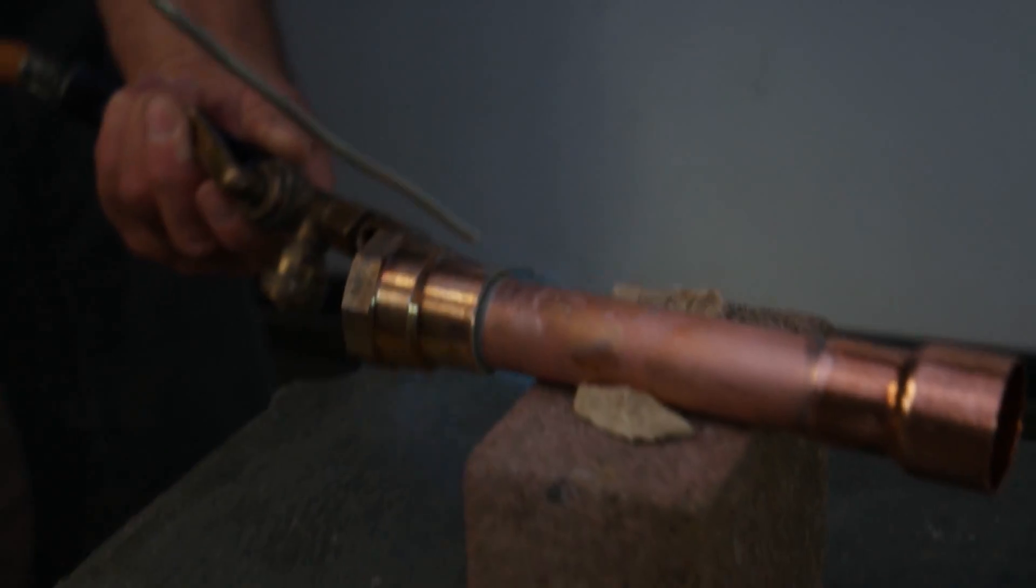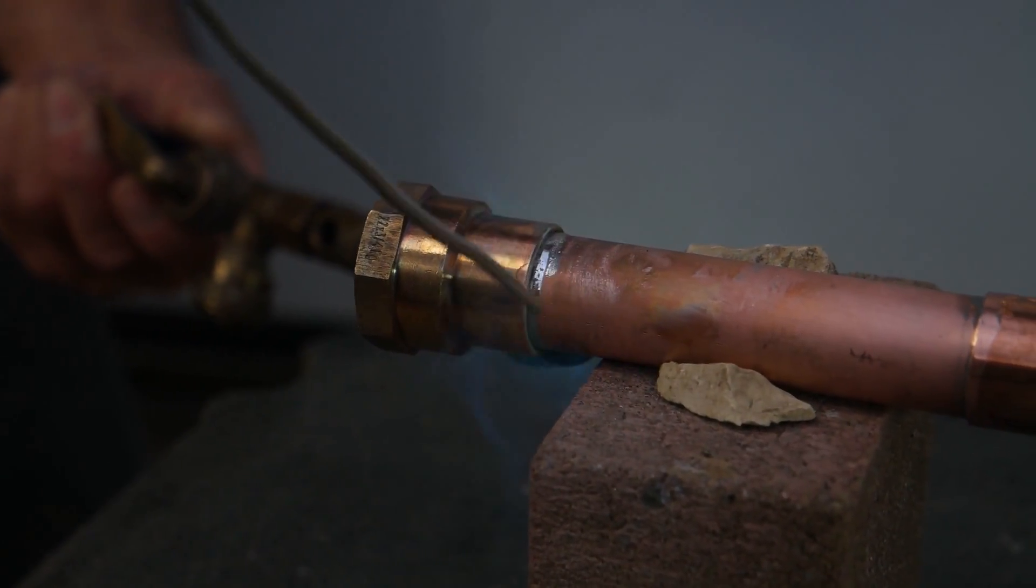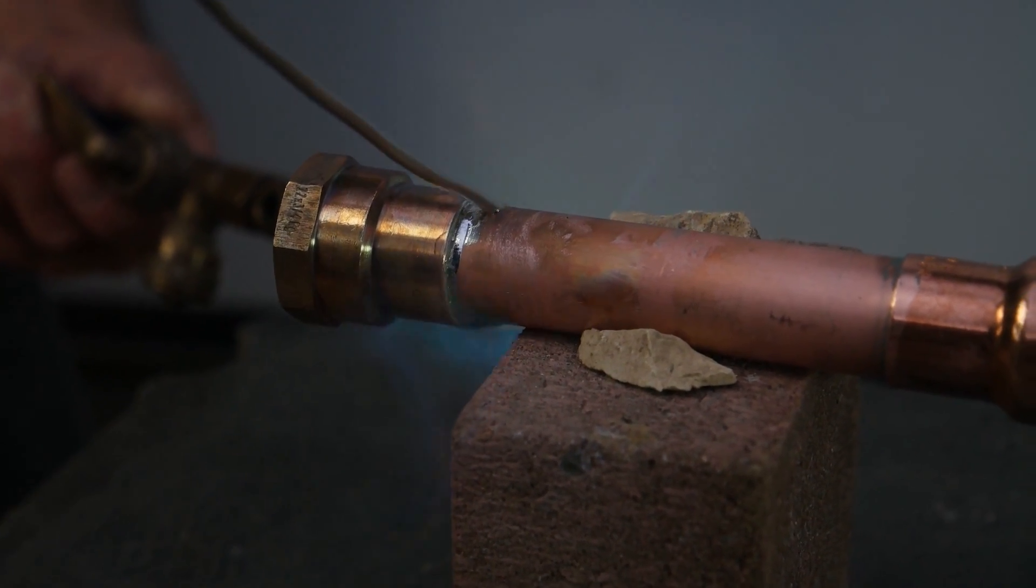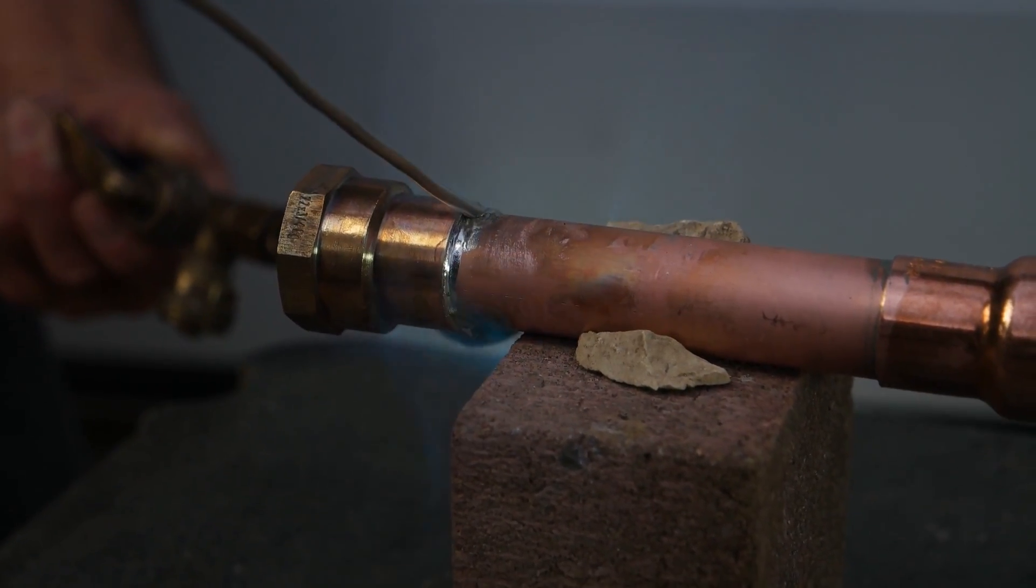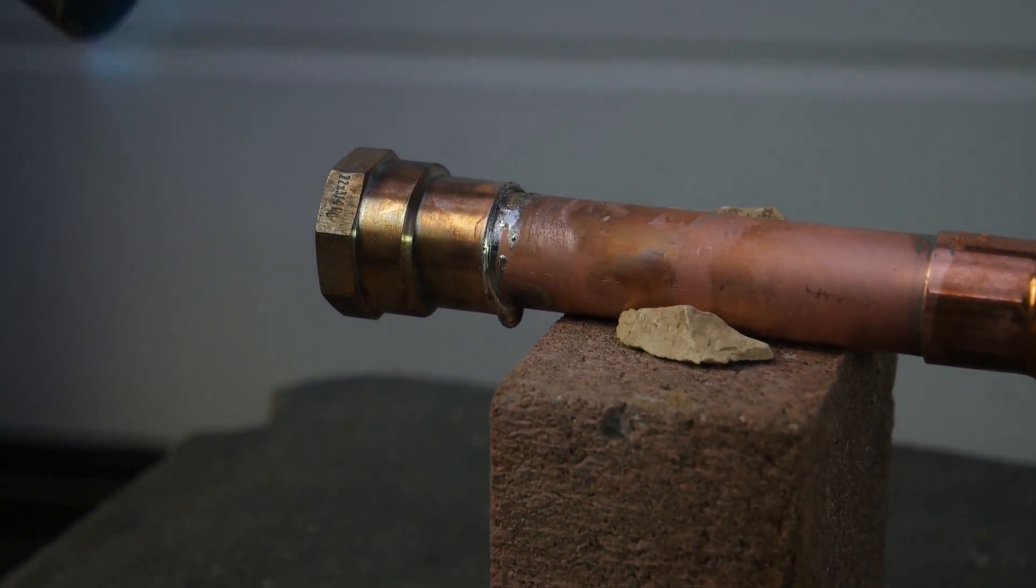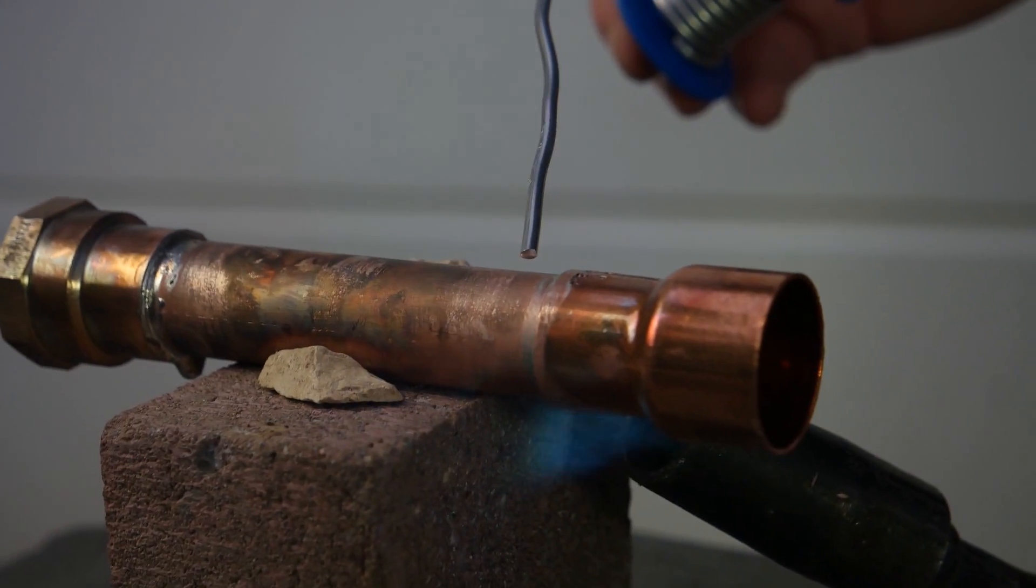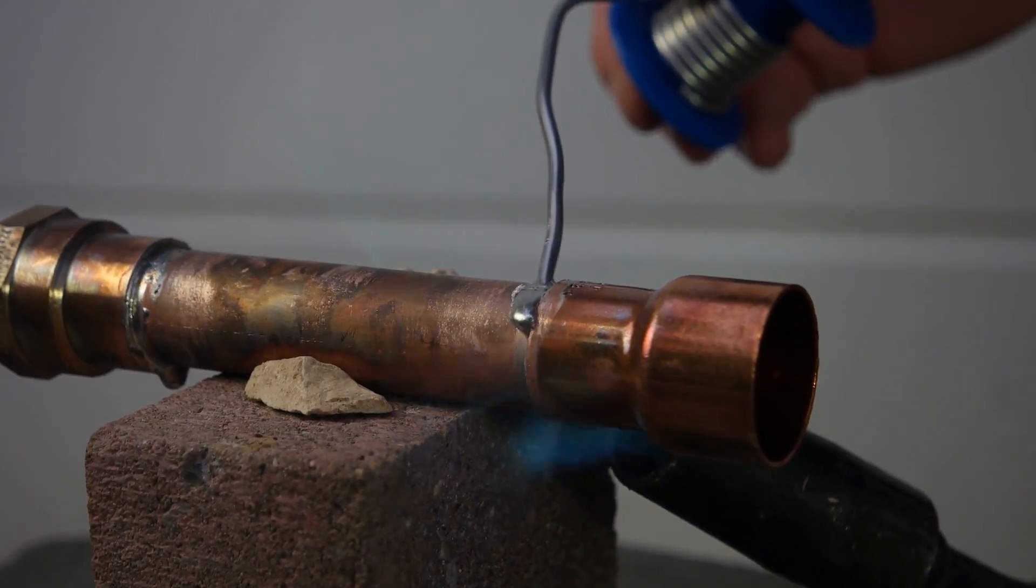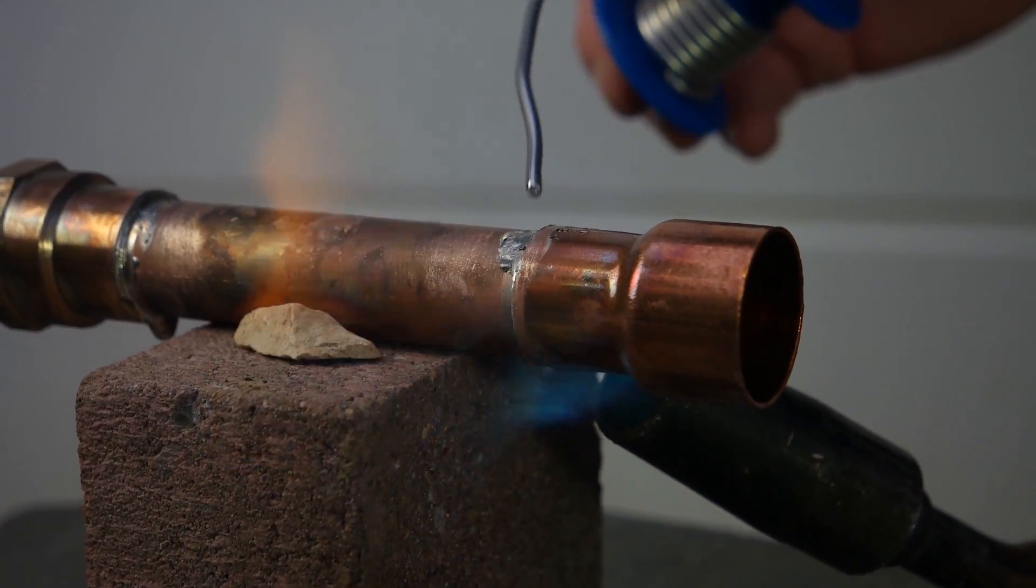After the tube has been sufficiently heated, the solder can now be held to the joint from above. If you have applied the flux correctly, the solder runs around the joint and seals it. As soon as a small drop forms on the bottom, you can continue with the next part.